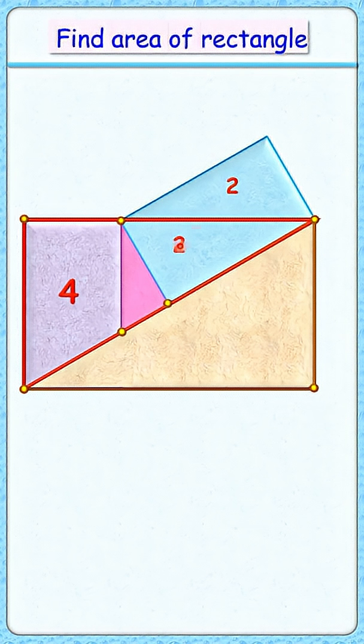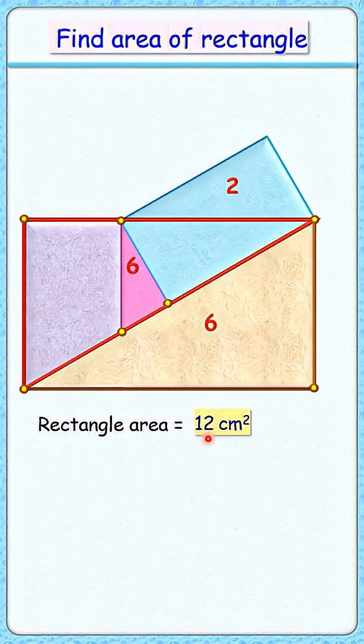And this is the diagonal of the brown rectangle. It's dividing it in two equal areas, so this area also is 6 centimeters square, and area of complete brown rectangle, that's 12 centimeters square. And that's our answer!